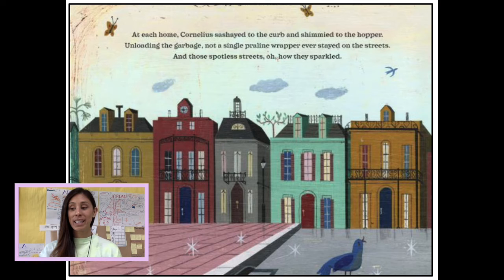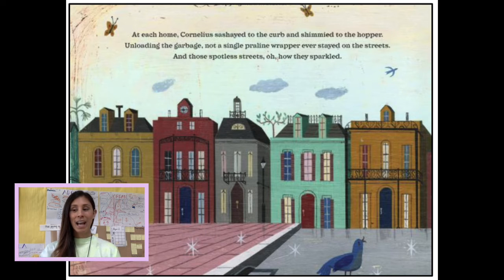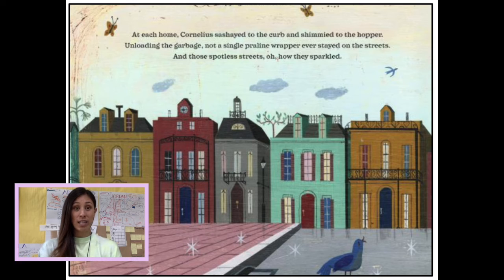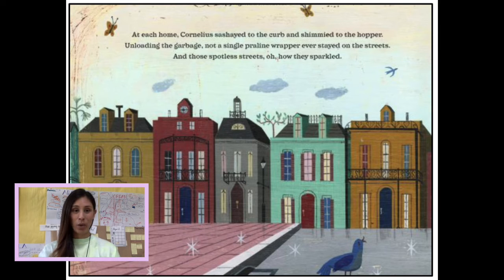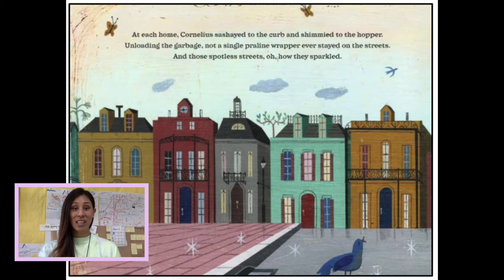At each home, Cornelius sashayed to the curb and shimmied to the hopper. Unloading the garbage, not a single praline wrapper ever stayed on the streets. And those spotless streets, oh how they sparkled. Now it's true that Cornelius was a garbage man and his job was to clean the streets, and I'm certain that at some point he probably did clean up praline wrappers. But it is somebody's opinion that the streets sparkled — it's not a fact. Streets don't sparkle when they get cleaned, but they are clean. So that part is actually an opinion.